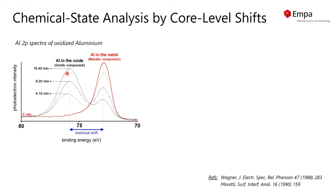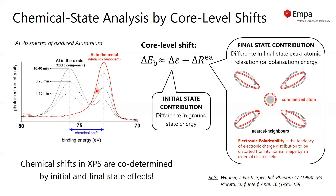We see a different chemical state of aluminum associated with aluminum surrounded by oxygen in the oxide. The difference between these peak positions is the core level shift. As shown by Wagner and reviewed by Moretti later on, the core level shift between these two different states has two contributions: an initial state and a final state contribution.